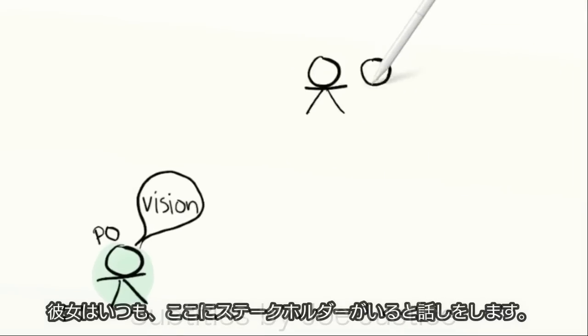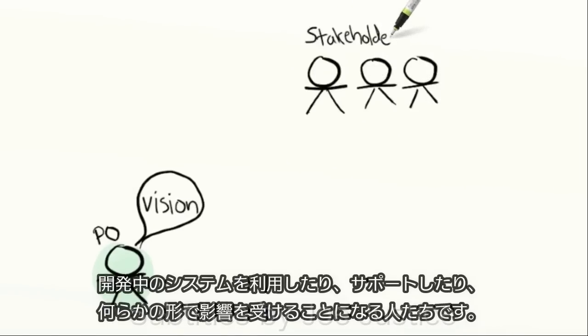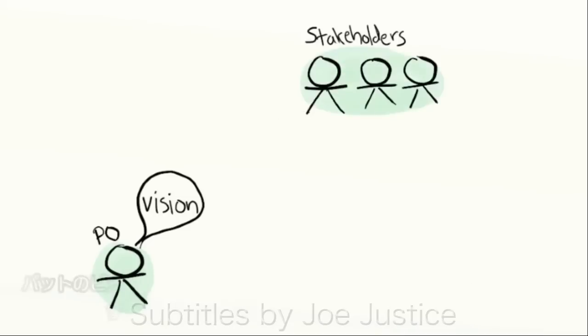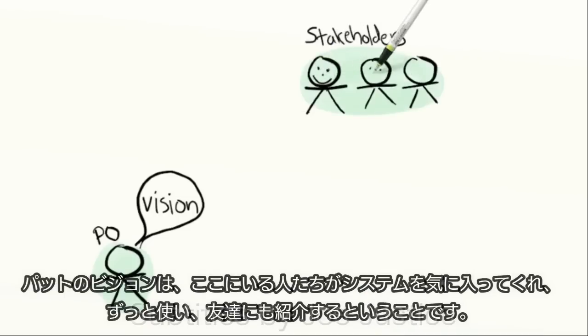Here are the stakeholders. They're the people who are going to use and support or in any way be affected by the system being developed. Pat's vision is that these people will love our system, use it all the time, and tell their friends about it.